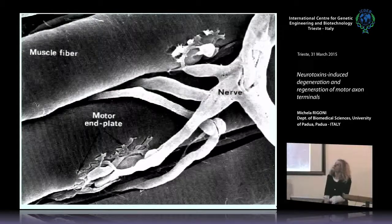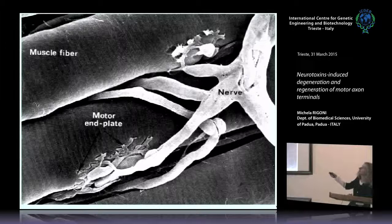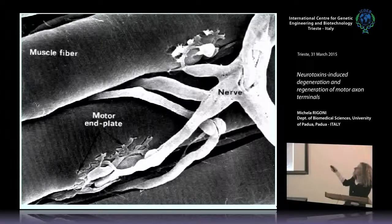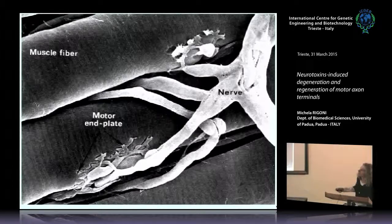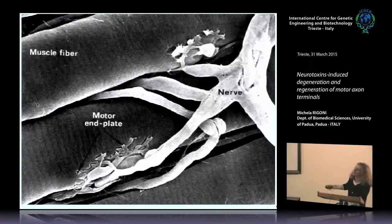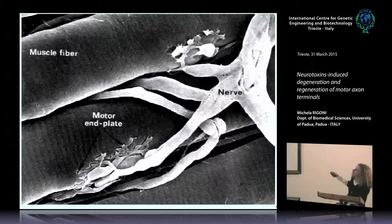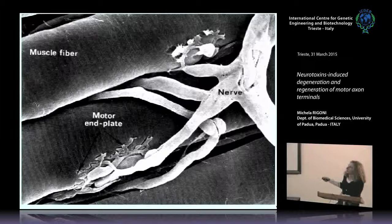We work on the neuromuscular junction, which is the site of transmission — where an electric impulse traveling along the nerve is converted into a chemical signal, thus triggering muscle contraction. The neuromuscular junction is a tripartite synapse, composed of a presynaptic nerve terminal opposed to the postsynaptic muscle fiber. The third component is represented by glial cells, the so-called Schwann cells, which produce myelin and envelope the axon, allowing the conductance of the impulse.